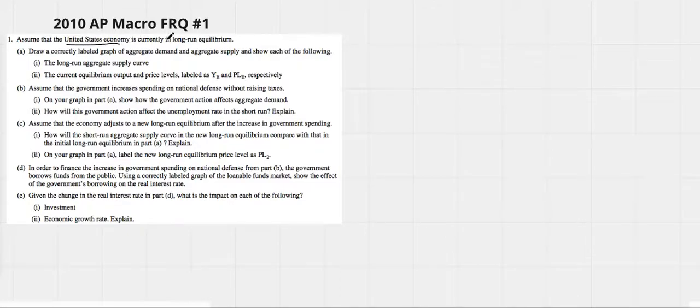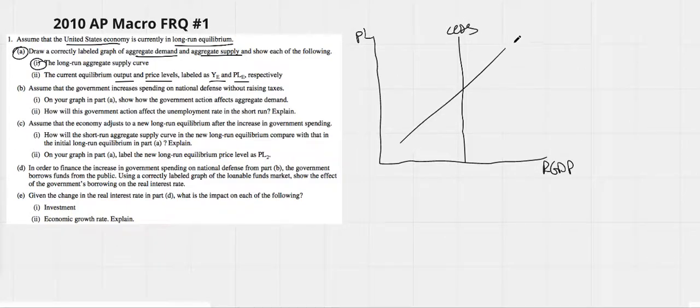Assume the United States economy is currently in long run equilibrium. Draw a correctly labeled graph of aggregate demand, aggregate supply showing the long run aggregate supply and current price and output as YEPLE. This is one of our five aggregate demand, aggregate supply curve graphs that we just have to draw. Price level on the vertical, real GDP on the horizontal. Long run aggregate supply is vertical also. Short run aggregate supply and aggregate demand. We are in equilibrium. This point right here is full employment, maybe potential GDP. It is also our natural rate of unemployment.